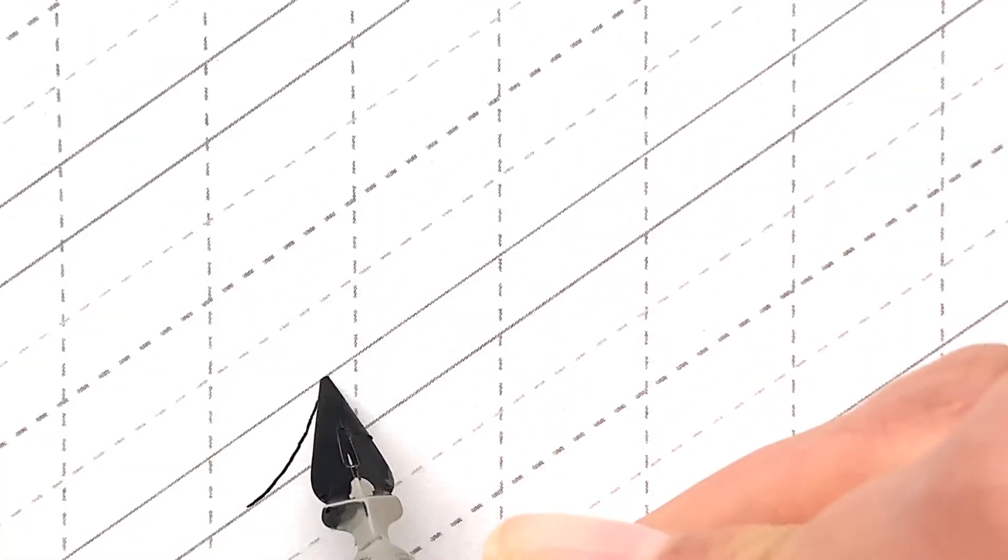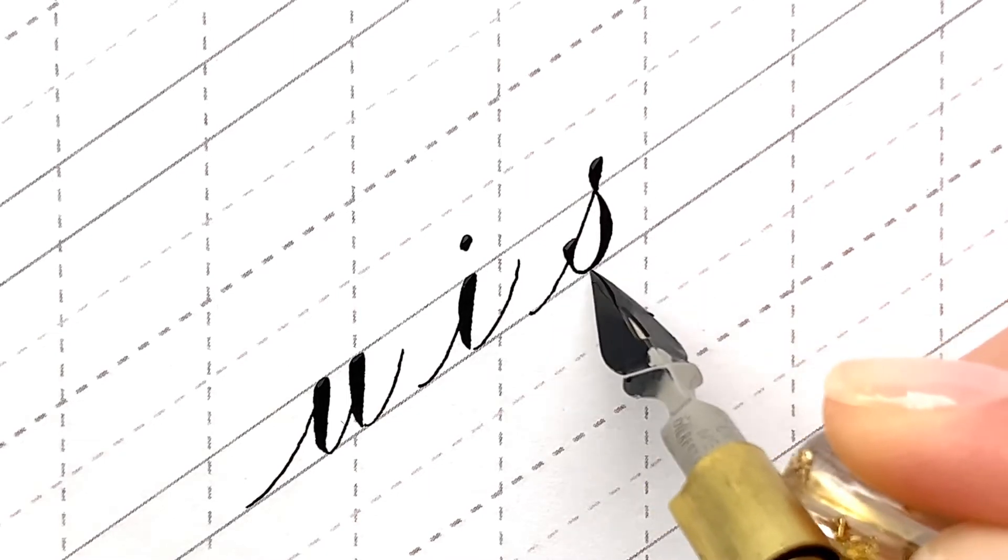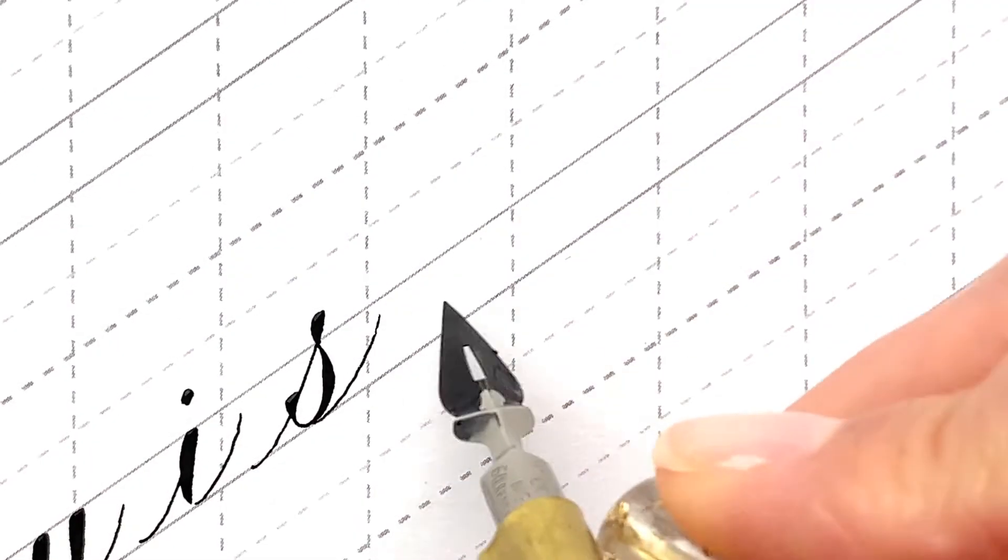Now let me demonstrate the rest of the lower cases we have already gone through in the previous episodes, which are u, i, s, t, and e.